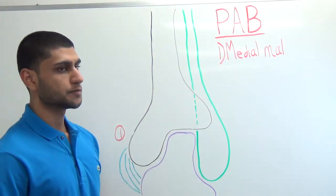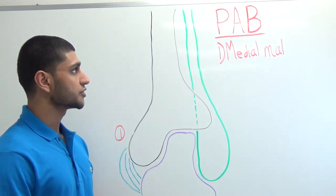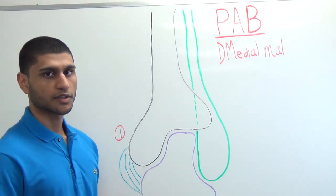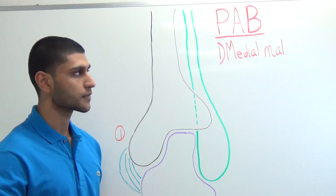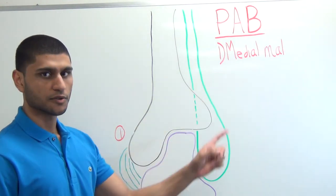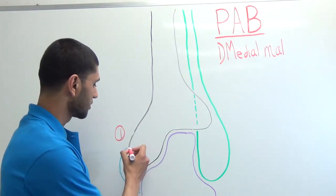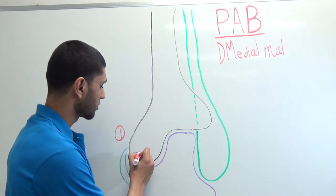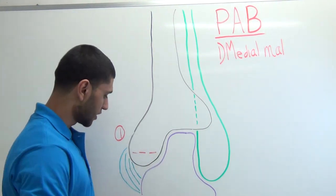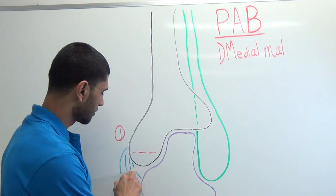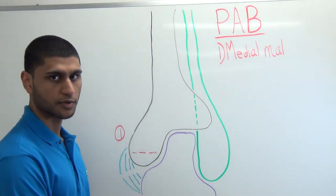The next classification is PAB, or pronation abduction, which has three stages. The mechanism of injury here is that the talus everts. PAB1 looks exactly like PER1 — you can either see a transverse avulsion fracture of the medial malleolus, a tear of the deltoid ligaments causing an increase in the medial gutter space, or a combination of both.